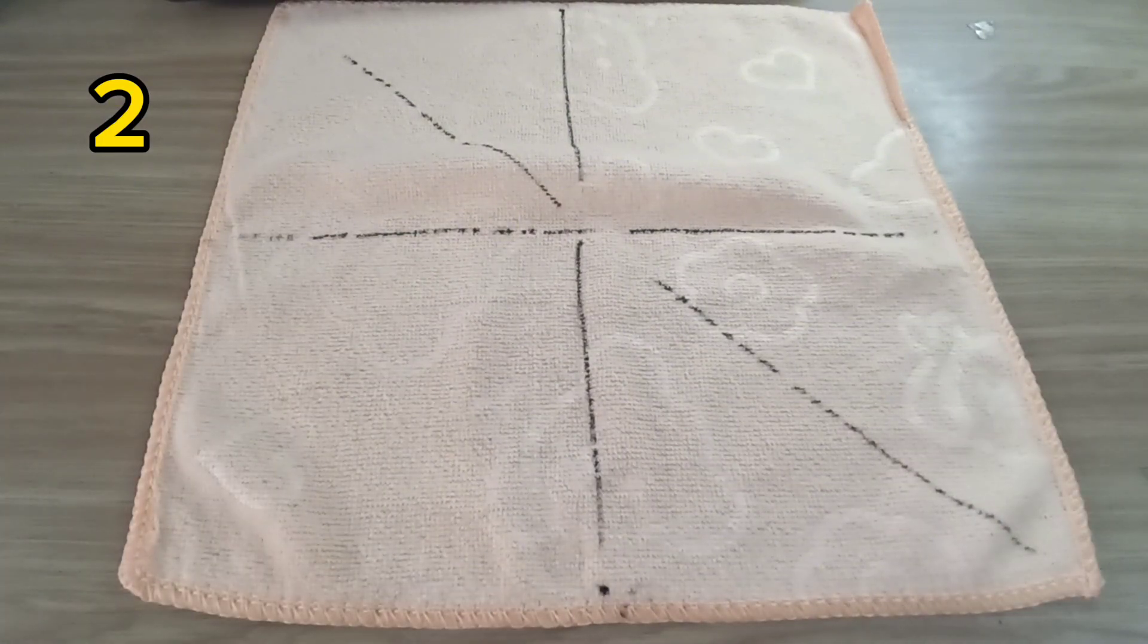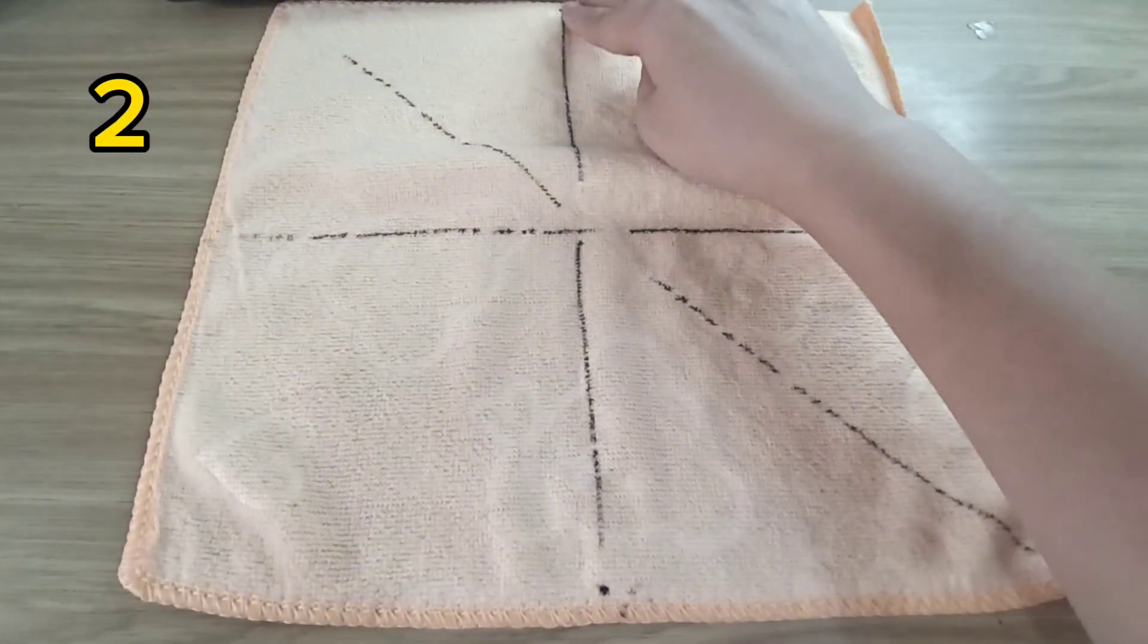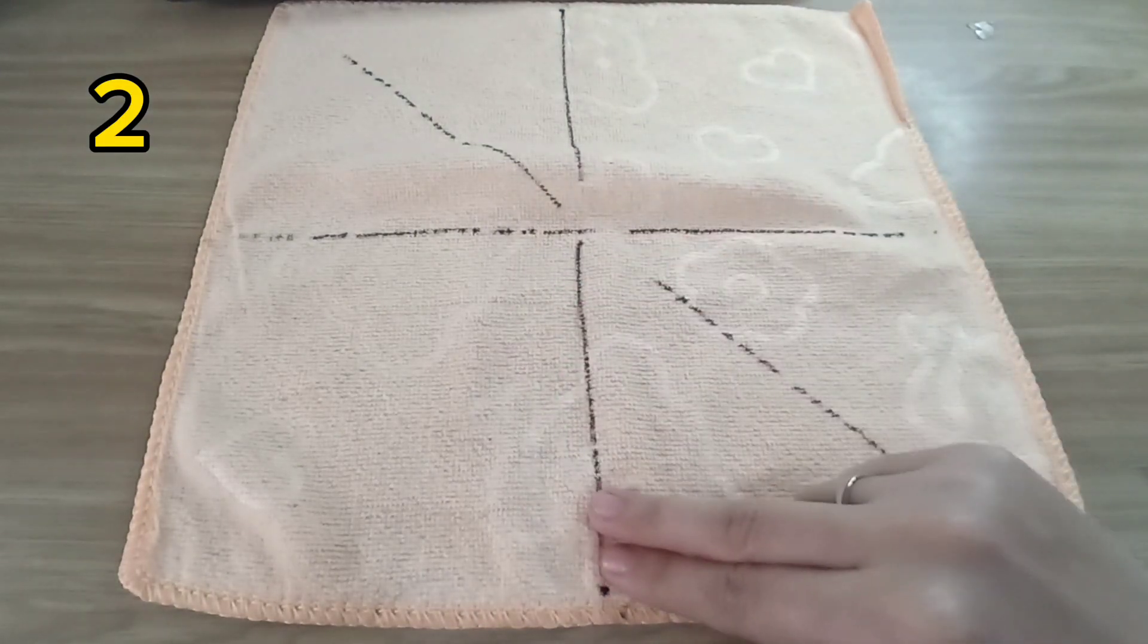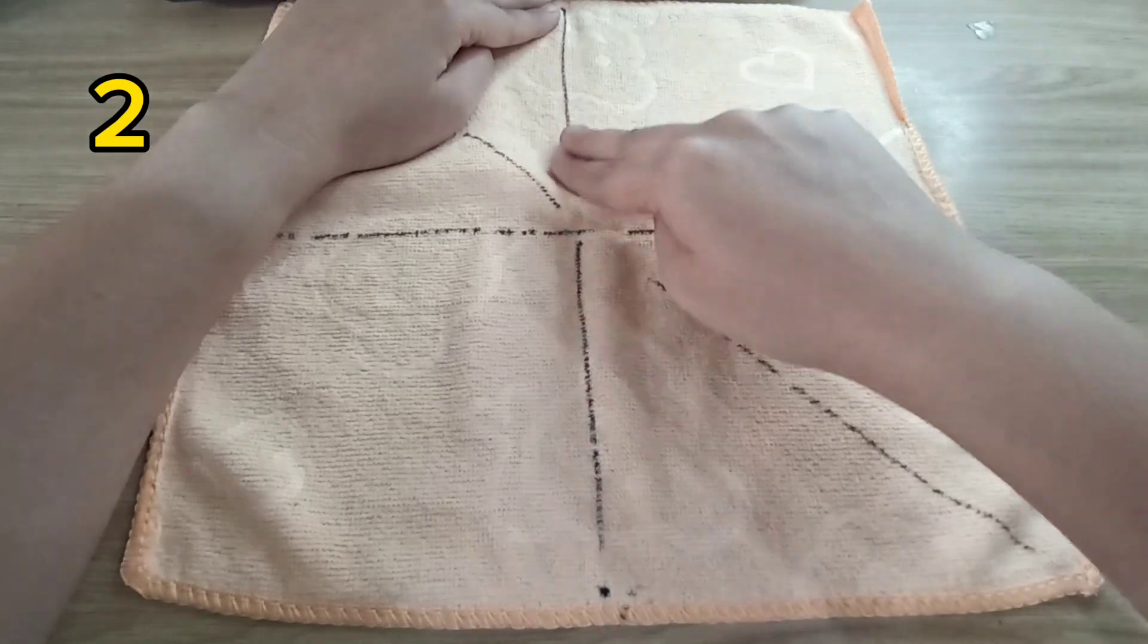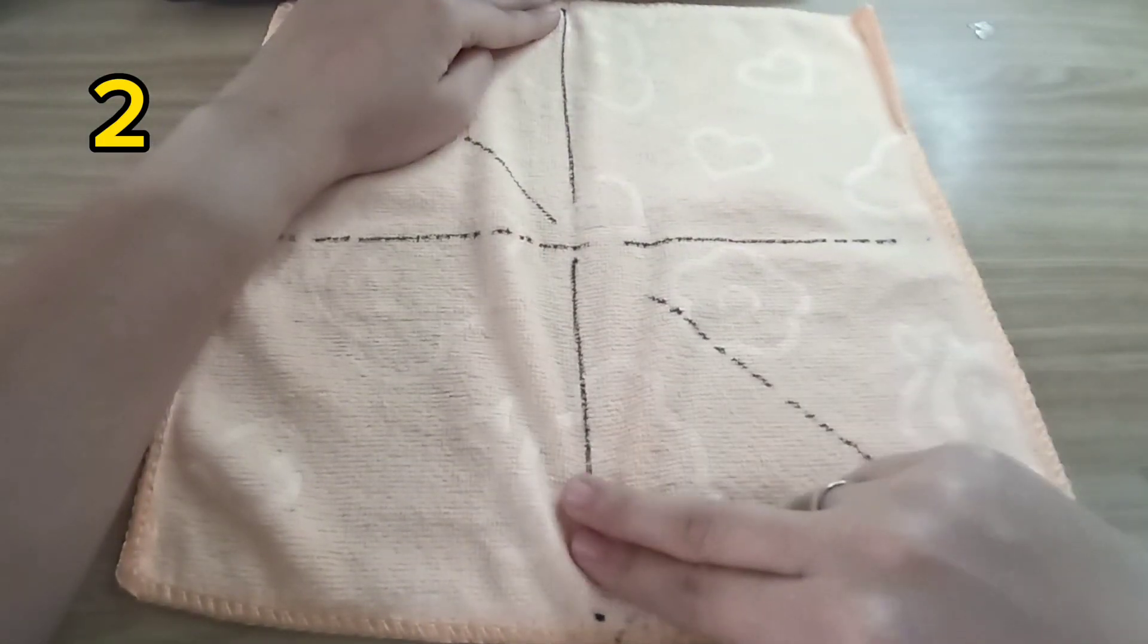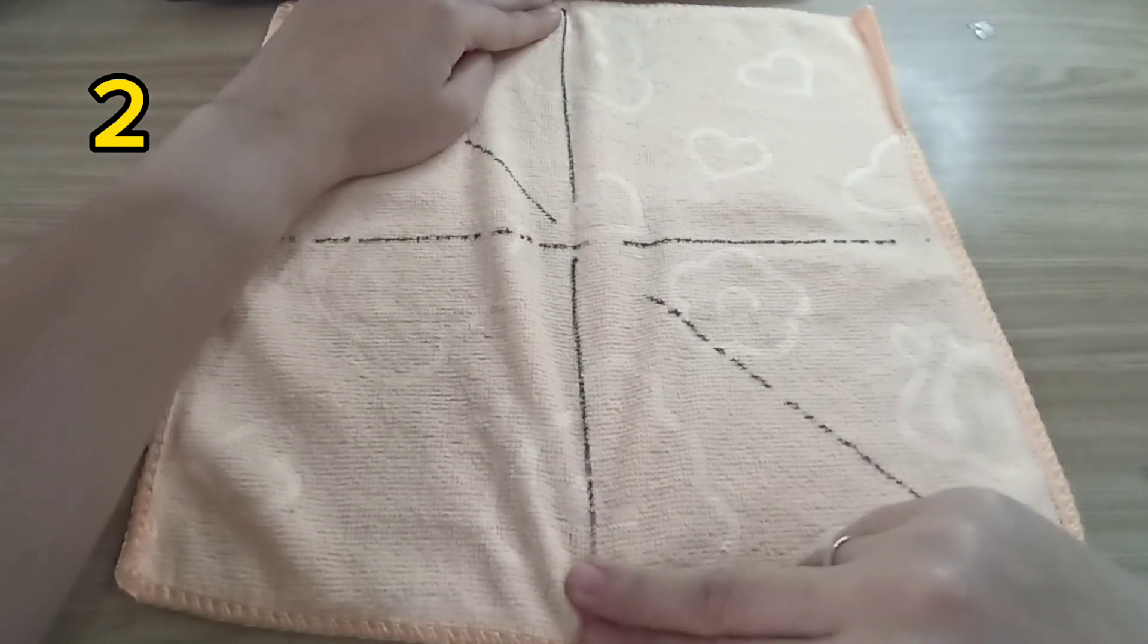This is number two. Trace the vertical line or standing line. Let's fold into a half.